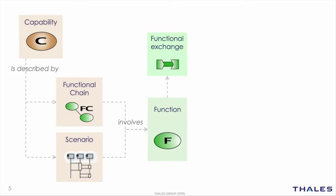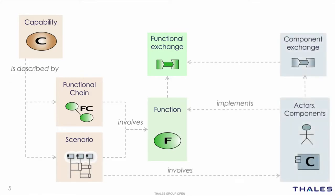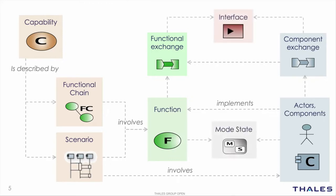Functions and functional exchanges are allocated to structural elements, such as the system itself, its constituents, or the actors. Functional exchanges are allocated to component exchanges. Functional exchanges and component exchanges can be further described by interfaces and data structures. Last but not least, modes and state machines attach to the structural elements and allow behavioural description of the system and a specification of which functional interface is available in which mode or which state.